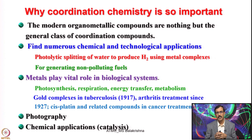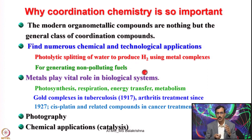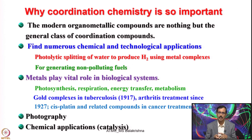Let me tell you why coordination chemistry is so important today. The modern organometallic compounds are nothing but the general class of coordination compounds and they find numerous chemical and technological applications. For example, if you want to split water photolytically to produce H₂, keeping renewable energy in mind, you have to go for metal complexes, and also for generating non-polluting fuels. We all know that metals play a vital role in biological systems.